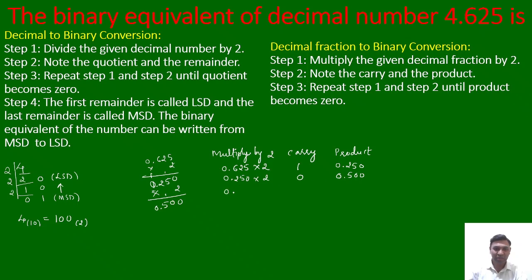Once again we multiply 0.500 by 2. The result is 1.000. Here we have a whole number again, so the whole number is taken as carry, which is 1, and the product is 0.000. The product is now 0, so we stop multiplying.